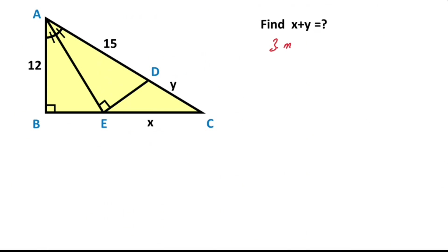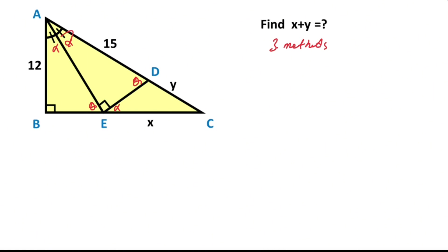Now we will calculate the value of x plus y using a third method. First of all, let's call these two equal angles alpha and here theta. That means here is also theta and this angle here is also alpha. If you notice that this triangle and this triangle have the same angles, that means these two triangles are similar.